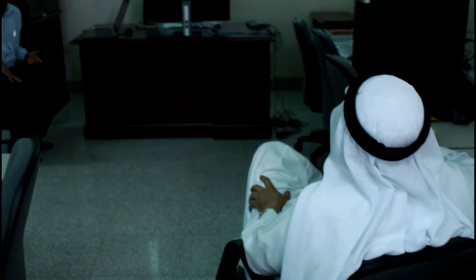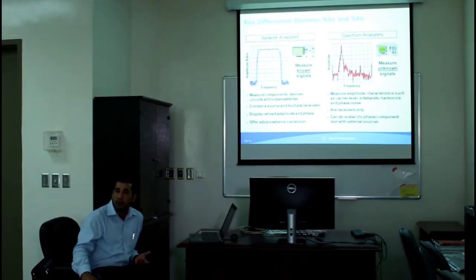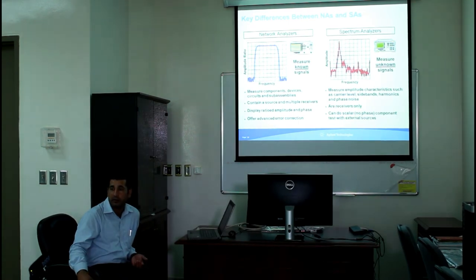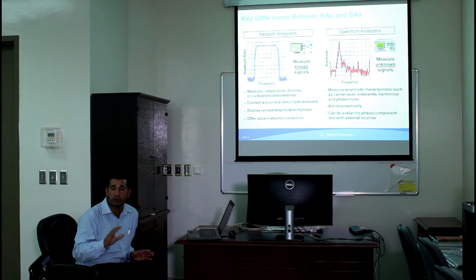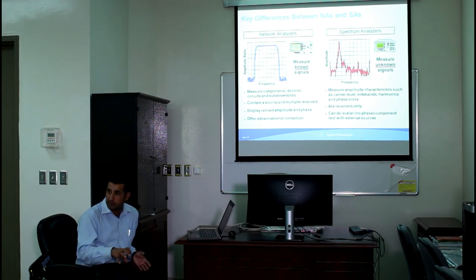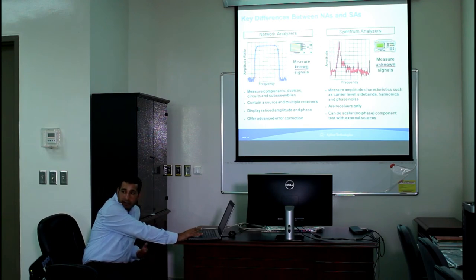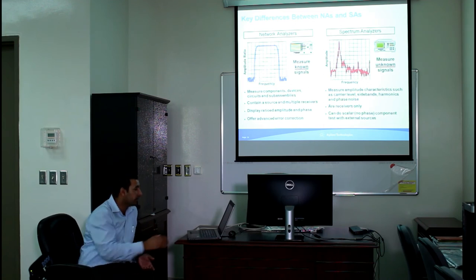One main difference between a network analyzer and a spectrum analyzer: in a spectrum analyzer we measure mostly unknown signals applied to the input. But in a network analyzer the signal is always known, because it has a built-in source — we set the frequency, so we always know the signal. Another main difference: the network analyzer has a built-in source plus receiver, so it can generate and measure the same signal. The spectrum analyzer is only a receiver. Also, the network analyzer can do vector measurements — amplitude and phase — whereas the spectrum analyzer does only scalar measurement with no phase information.